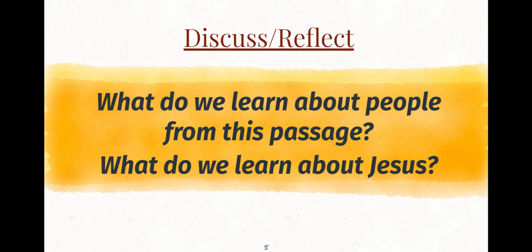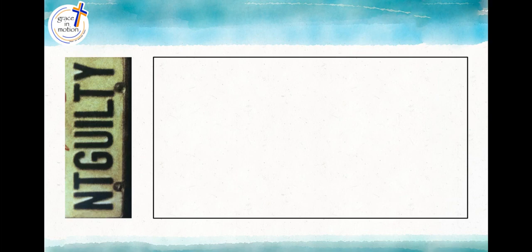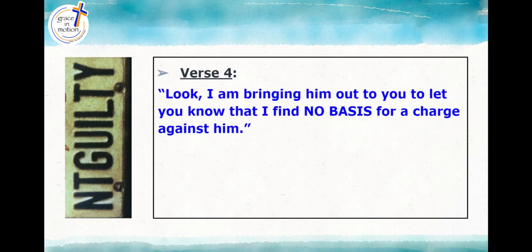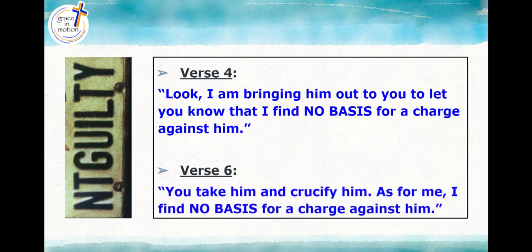We have this whole thing kicking off with Pilate ordering Jesus to be flogged, and then soldiers put a crown of thorns and a robe on Jesus and hit him. Then we have this interesting incident in the words of Pilate — he tells the Jews again, 'I am bringing him out to you to let you know that I find no basis for a charge against him.' The chief priests cry out in response, 'Crucify.' Pilate answers them, 'You take him and crucify him. As for me, I find no basis for a charge against him.'